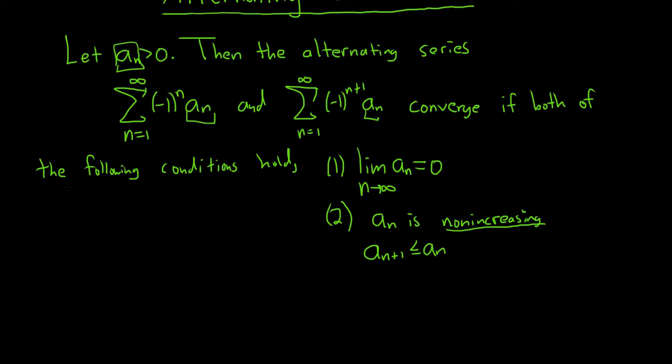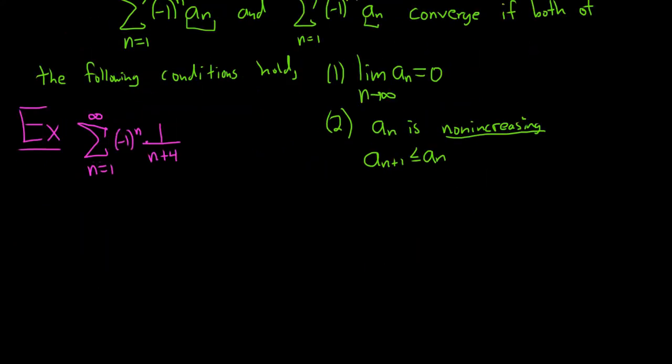Let's go ahead and do a simple example. Say we have the infinite sum as n runs from 1 to infinity, negative 1 to the n times 1 over n plus 4. So this is an alternating series. It fits the form that we have above. So let's try to use the alternating series test. Solution. To use the alternating series test you first should identify your a sub n. So a sub n here is going to be equal to 1 over n plus 4.